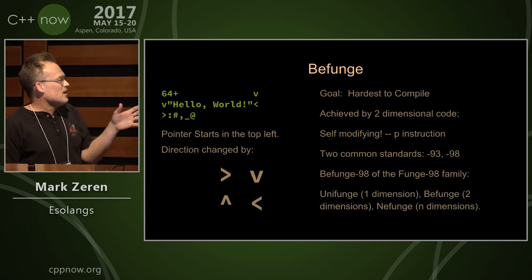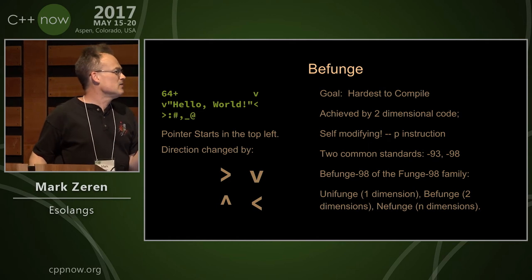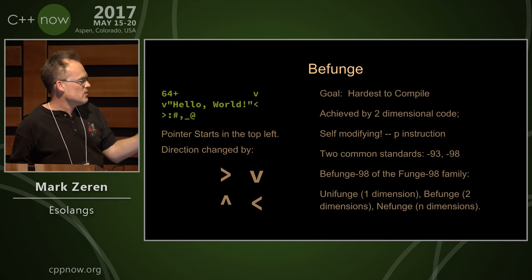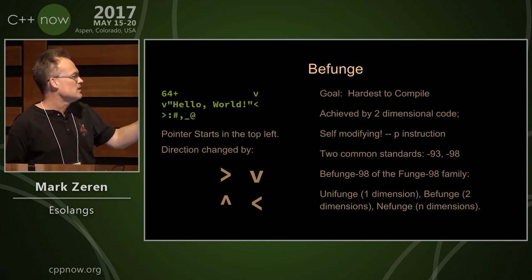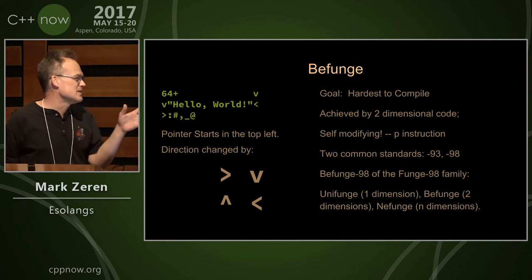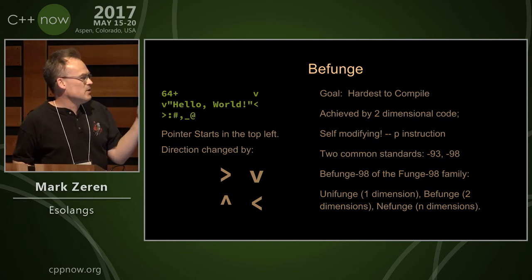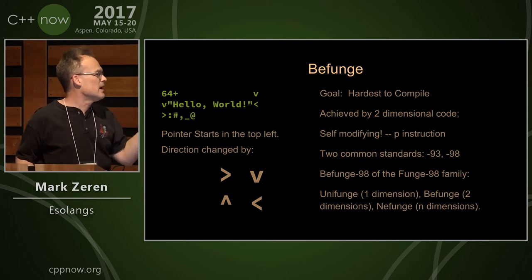The next one is Befunge, and the goal here was to write the hardest to compile language. This is achieved by two-dimensional code. The direction of the instruction pointer is changed by the instructions on the bottom left. It's of course self-modifying. And there's actually a whole family of these: one-dimensional, two-dimensional, and n-dimensional Befunges.